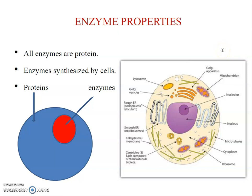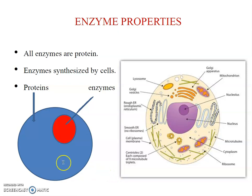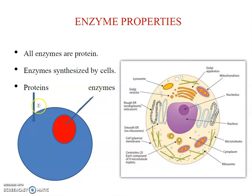The first property of enzyme is that all enzymes are protein. Protein is synthesized by living cells. Proteins are of two types: structural protein and functional protein. Enzymes come in the category of functional protein, so all enzymes are protein because enzyme is a part of protein. But not all proteins are enzymes, because some proteins are structural.